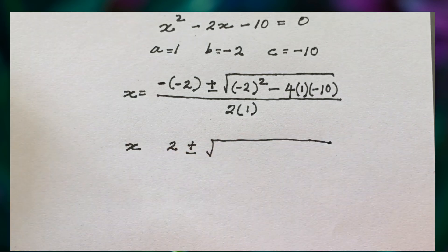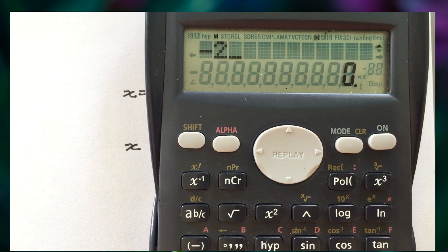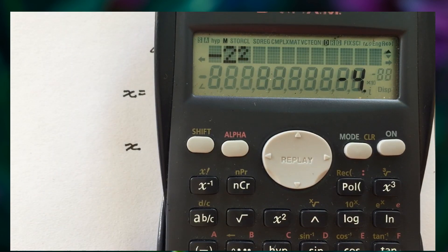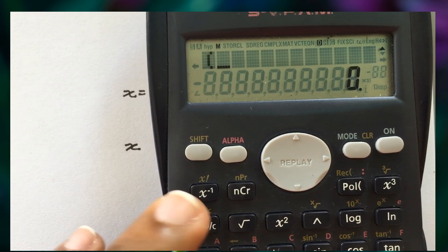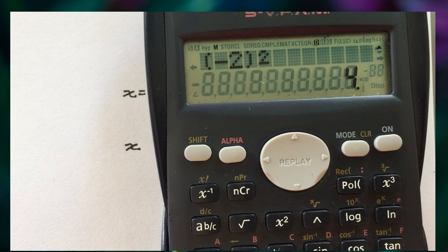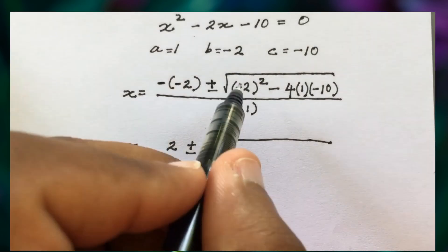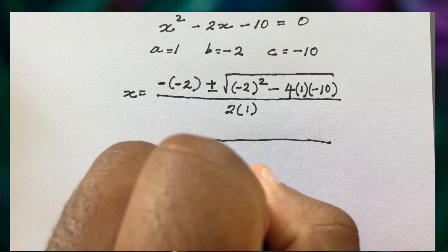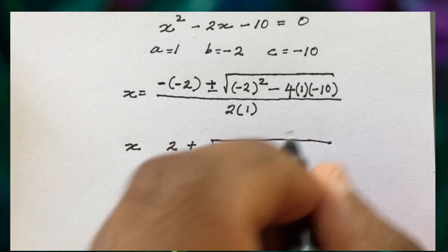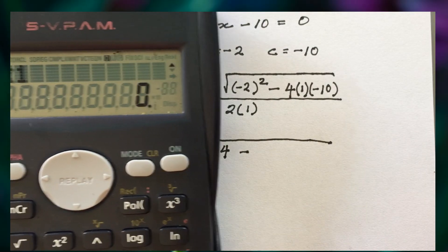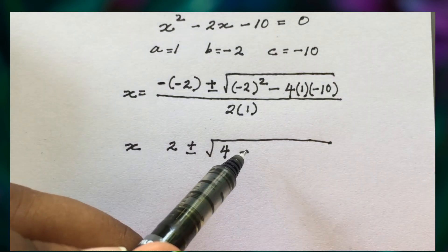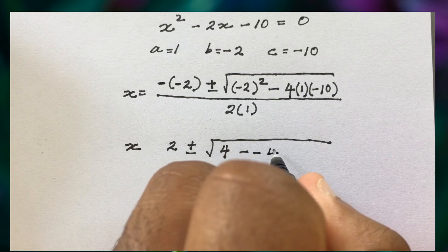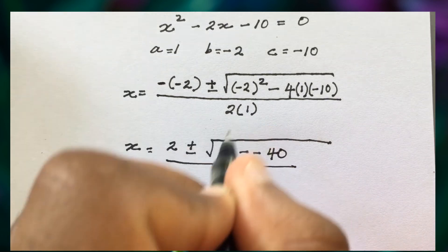Under the square root, negative 2 squared gives us positive 4 — watch out for that, because a negative times a negative is positive when squaring. So we have 4. Then we need to work out 4 times 1 times negative 10, which gives negative 40. We have a minus sign followed by negative 40, and the denominator is 2 times 1, which is 2.